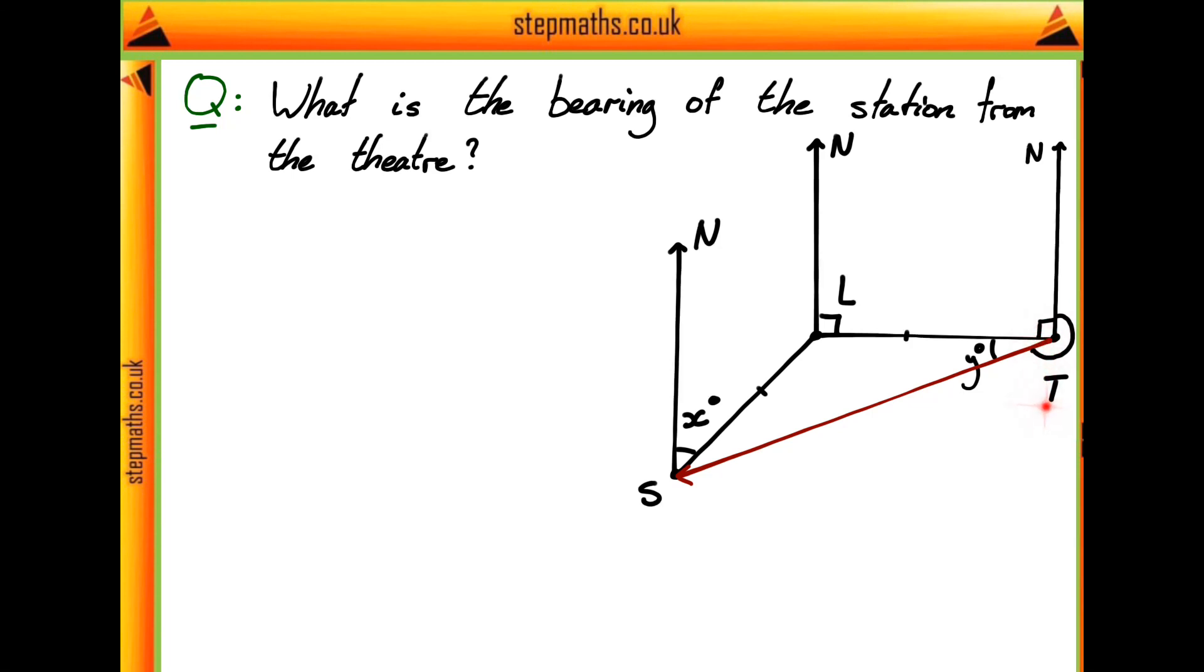So if we do want to try and find our bearing, then we can just find 360 degrees, the total number of degrees around t, and we can take away this value of y degrees and our 90 degree angle here, which is why I've got this expression for 360 take away our 90 plus y. So what this means is to try and find our bearing, all we actually have to find is this angle y.